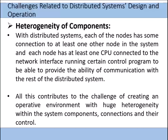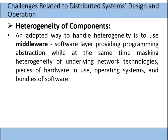Connectivity of different computing devices and producing communication and coordination among different nodes is a challenge. An adopted way to handle heterogeneity is to use middleware — a software layer providing programmer abstraction, which means hiding the details. Software developers are provided middleware to ensure abstraction while masking the heterogeneity of underlying network technologies, hardware, and operating systems.